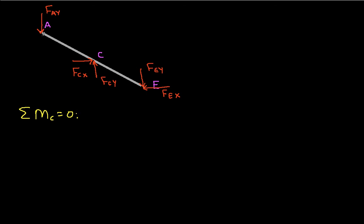So FAY will have a positive moment. It's trying to rotate counterclockwise. So we have FAY times a moment arm of one meter, minus FEY times one meter, minus FEX which has a moment arm of 0.5 meters. And that's equal to zero.